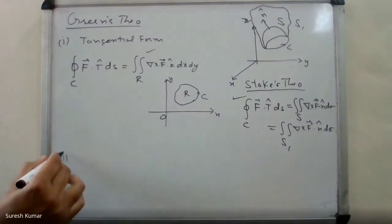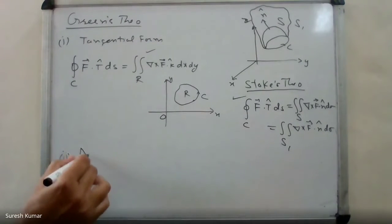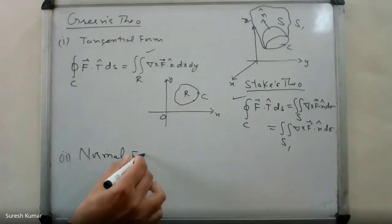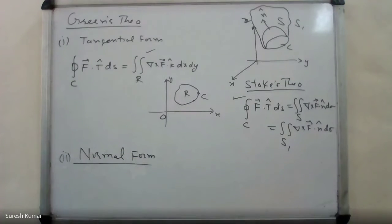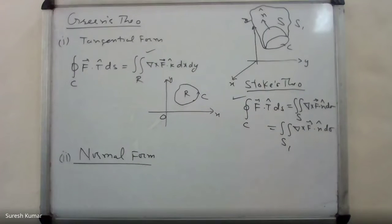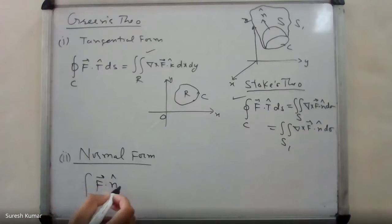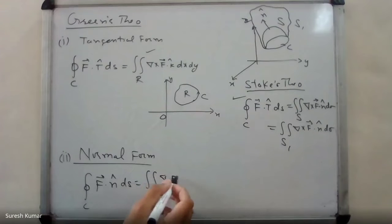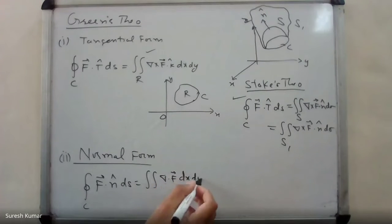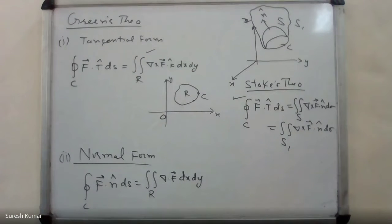Let us discuss one more theorem — that is the Divergence theorem. We will see that it is a generalization of the normal form of Green's theorem. The normal form of Green's theorem states: if F is a vector field having continuous first-order partial derivatives in an open region, carrying a piecewise smooth simple closed curve C enclosing region R, then the outward flux of F across C is given by the double integral of divergence of F over R.